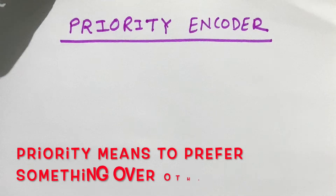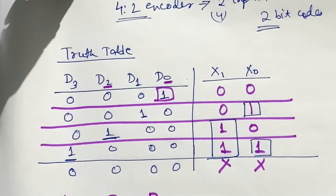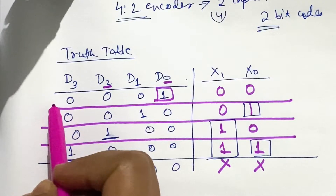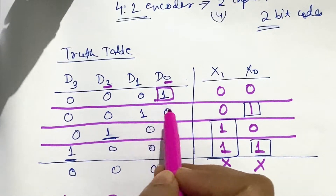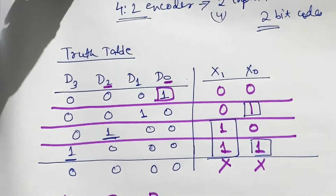So far, what we have seen is that in an encoder, at the input side, only one line is high at a time and we get the binary code corresponding to it. But what if we get more than one input line as high? For example, d0 is 1 and rest all are 0, or d1 is 1 and rest all are 0. What will happen if any two of them are high at a time? That is what we will see in a priority encoder.